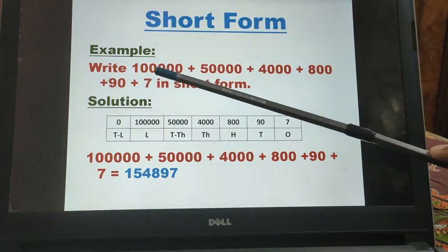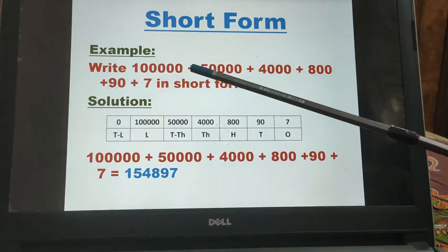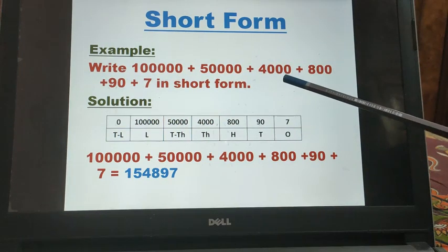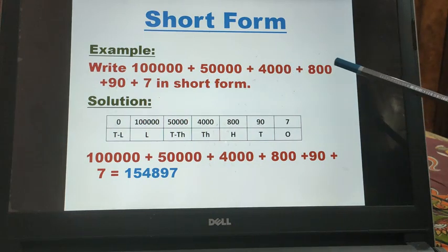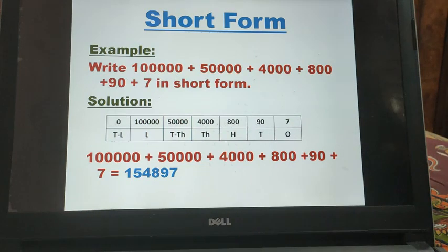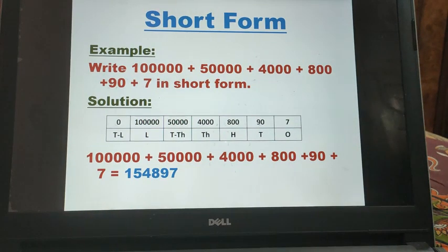Write 1 lakh plus 50,000 plus 4000 plus 800 plus 90 plus 7 in short form. When you have to write the number in short form, first you will find the places of that number.